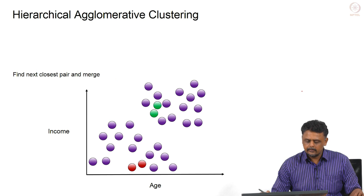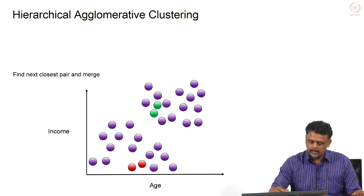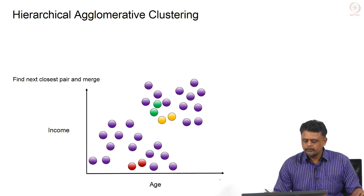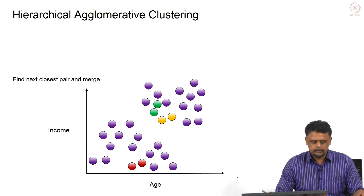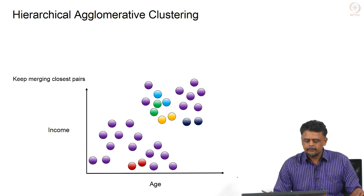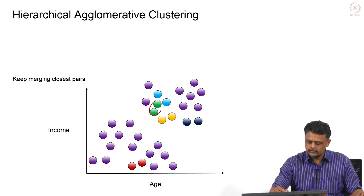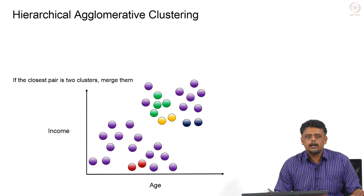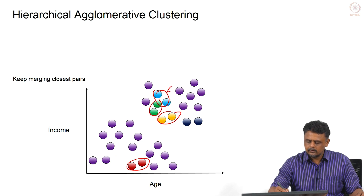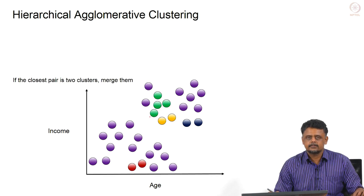In the next iteration we find the next closest pair and merge them. We continue this way, looking at two data points or two clusters at a time, finding the dissimilarity metric and merging those with the least dissimilarity. We can have about four clusters at some point, and if the closest pair consists of two clusters, we can merge those clusters themselves.